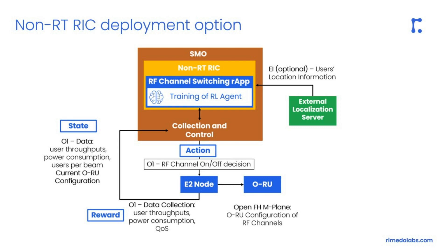In order to perform RF channel reconfiguration we propose to utilize the concept of reinforcement learning, where a so-called agent interacts with the environment in a cyclic manner. At the beginning of the cycle, the agent recognizes the state, which in our case consists of user throughputs, power consumption, number of users per beam, and current open radio unit configuration. On the basis of the state the agent takes an action — it selects one of the possible RF channel configurations. Finally, the agent receives a so-called reward that is related to user throughputs, power consumption, and quality of service metrics. Then the cycle repeats.